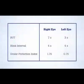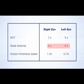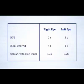The recorded blink rate and the BUT recorded at the same session are used to calculate the OPI. In the following example, the blink interval is 4 seconds. The right eye BUT is 7 seconds, and the OPI is a healthy 1.75.